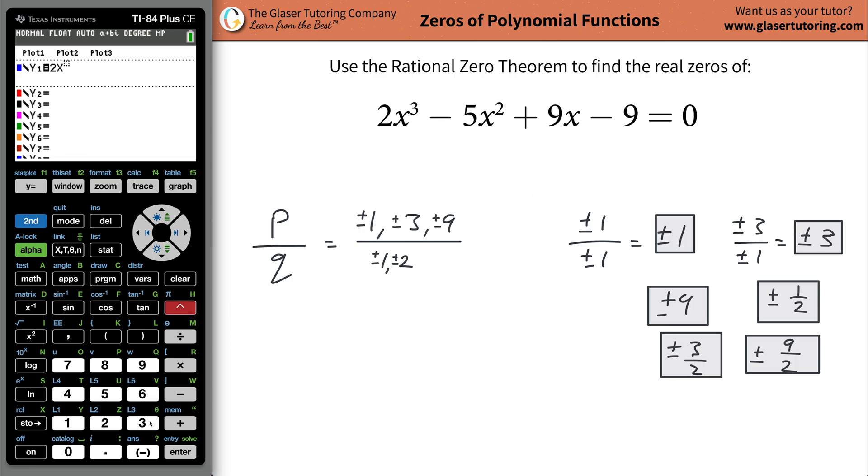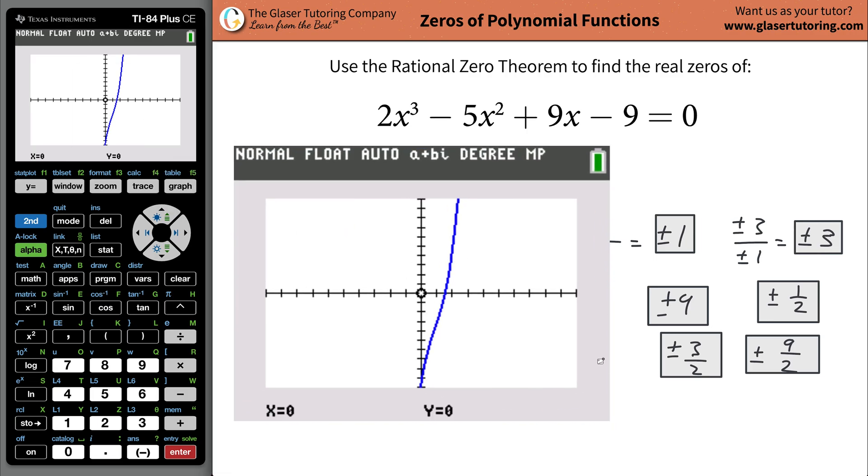So go to y equals and plot this thing: 2x³ - 5x² + 9x - 9, and graph it. Now notice that this thing only crosses, it appears, one time. Each one of these tick marks represents a value of 1. So if we have a little bit of an aid here, it looks like it's possibly 1 and a half. Do we have a value over here that's 1 and a half? Sure we do. Positive 1 and a half, and that's the same thing as 3/2.